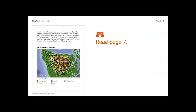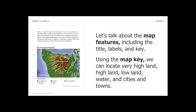Now we're going to read page seven. 'Here's a map of those same mountains. A map is not a photo — it is a picture people create. A map shows the land and water in simple ways. Sometimes the colors are different on a map than they are in real life — this makes things easier to see and find. Most maps have something called a key or a legend. A map key is a guide to the map; it helps you figure out what each part of the map shows.' We're going to talk about the map's features including the title, labels, and key. Using the map key we can locate very high land, high land, low land, water, and cities and towns.